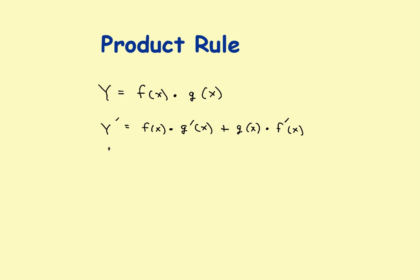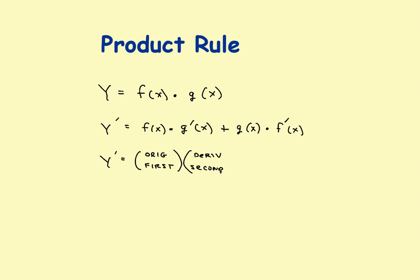But that's not the way I would remember it. The way most people remember it — I would word it like this in English: I like to think of it as the original first function times the derivative of the second function, plus the original second function times the derivative of the first function.